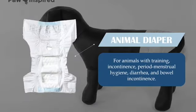And the third specification is animal diaper. It is for animals with training, incontinence, area of natural hygiene, diarrhea and bowel incontinence. As we can see in the picture, there is a hole for animals' tail.